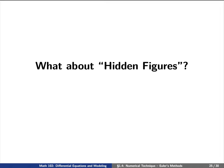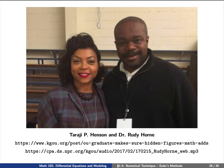But now, let's go back to our original motivating question. What about Hidden Figures? Is it really the case that Katherine Johnson used Euler's method to actually compute all of these paths?